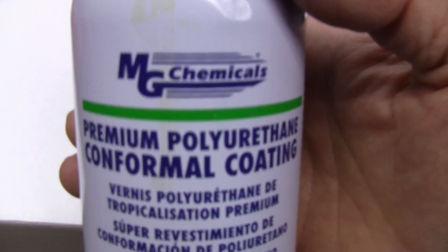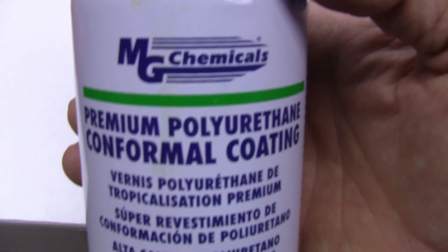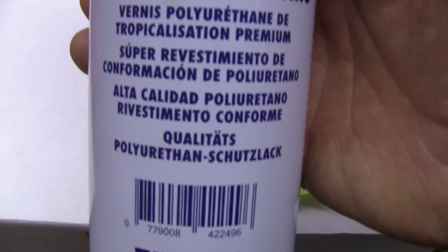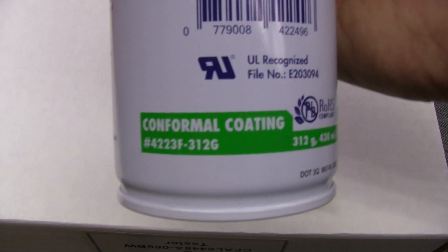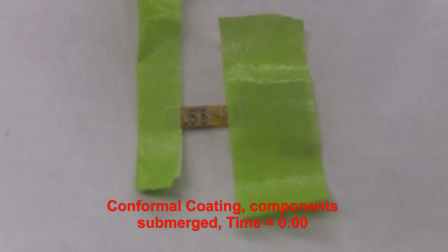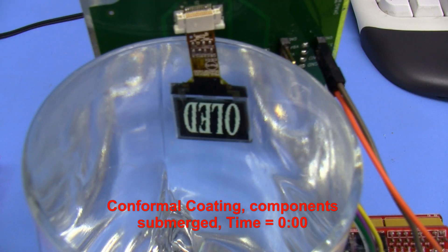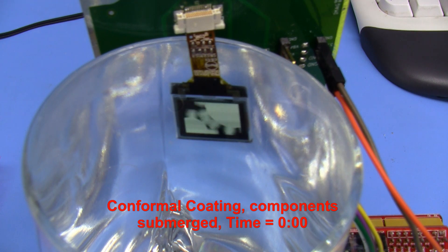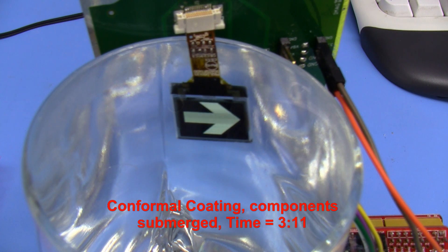We're going to try spraying one of these with a conformal coating. This is MG Chemicals conformal coating. We've got the OLED in the water—this one has conformal coating over the components and it was heat-cured at about three hours at 215 degrees Fahrenheit, about 100 degrees Celsius, as per the instructions on the conformal coating.